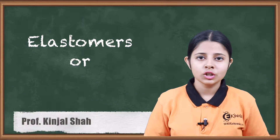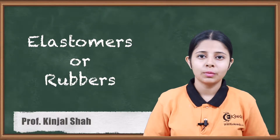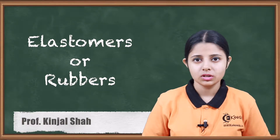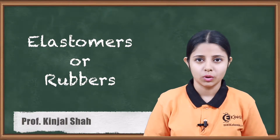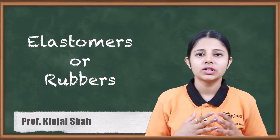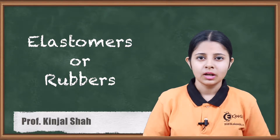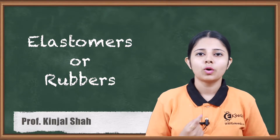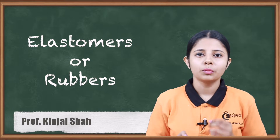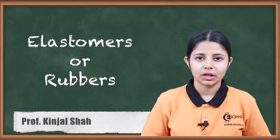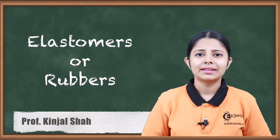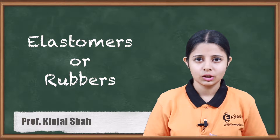Hello friends. In today's session we are going to study about what exactly are elastomers and what are rubbers. Elastomers and rubbers are generally the same thing, but they have one property which differentiates them from all other chemicals or other polymers, and that is the property of elasticity.